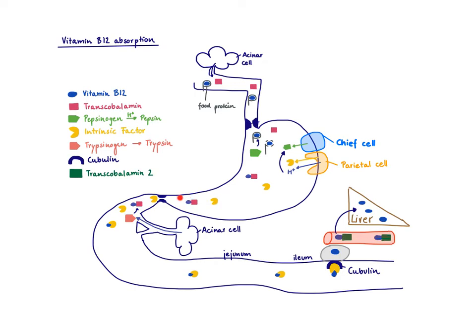In the duodenum, trypsinogen is released from the acinar cells and activated by enterokinase to become trypsin. Trypsin then degrades the transcobalamine. Now the intrinsic factor can finally bind to vitamin B12. It brings vitamin B12 into the ileum, where intrinsic factor has a specific receptor called cubilin that takes up the vitamin B12.